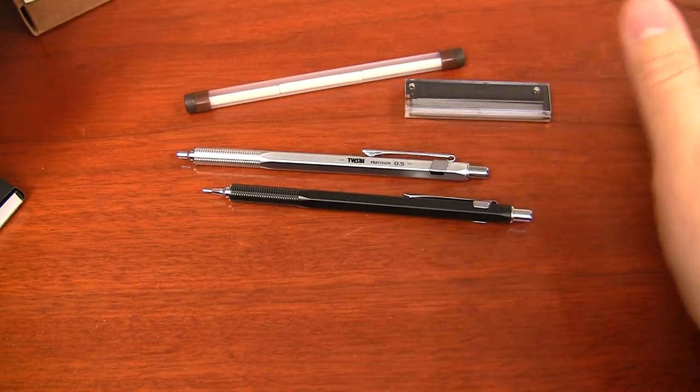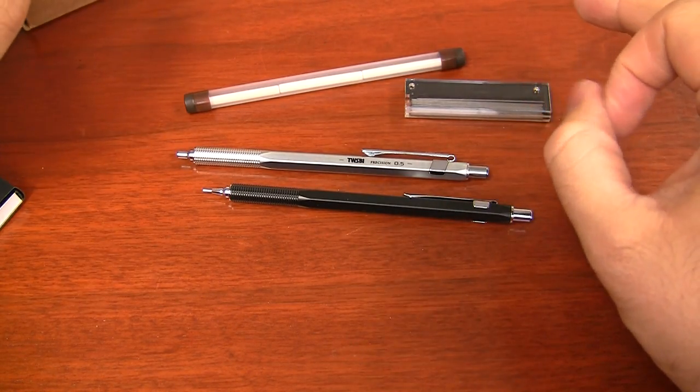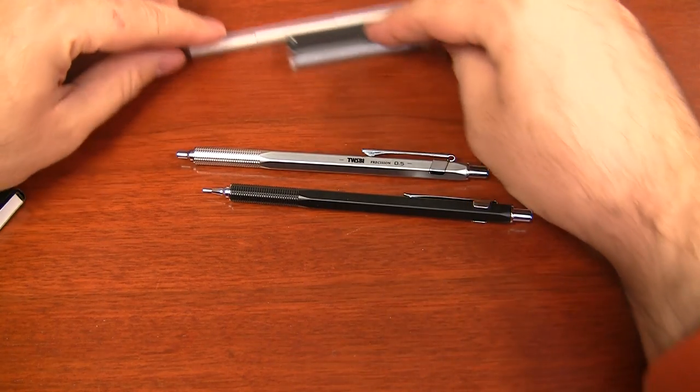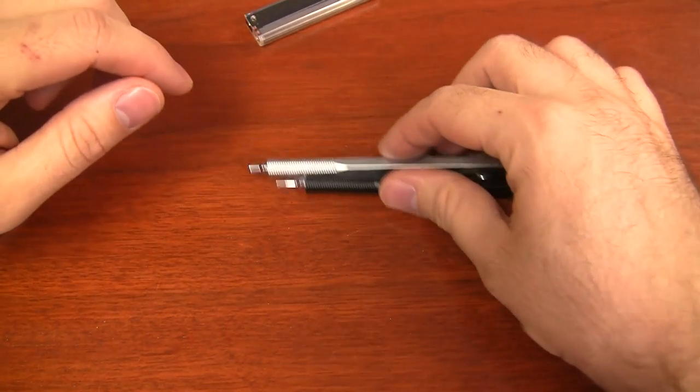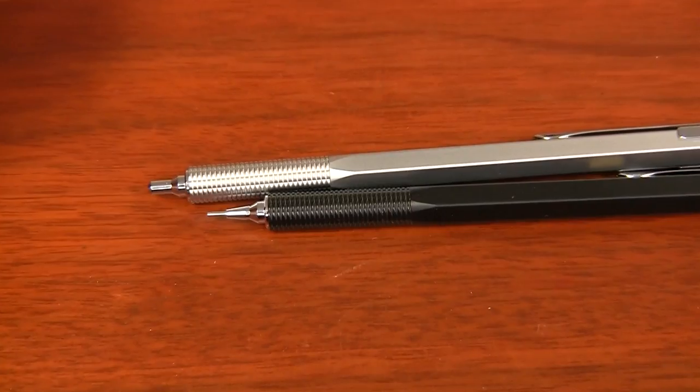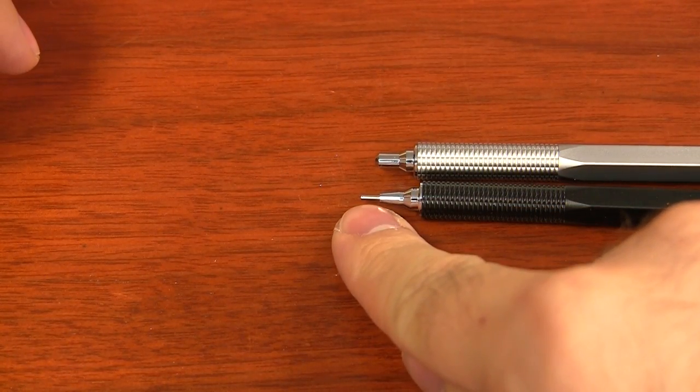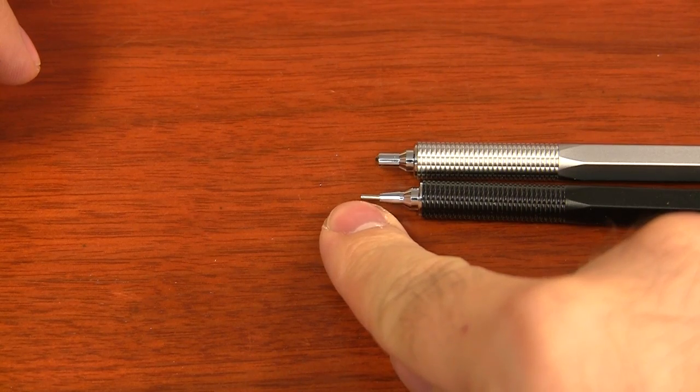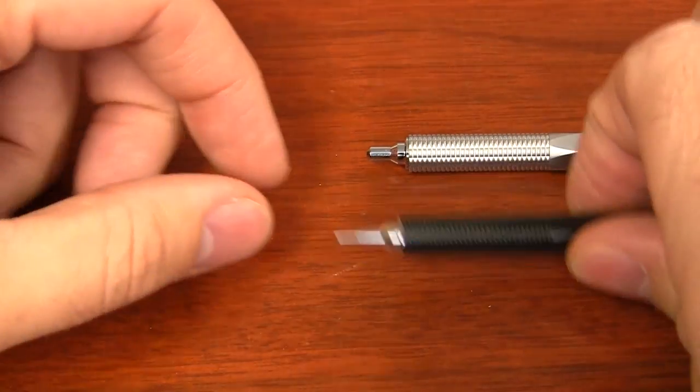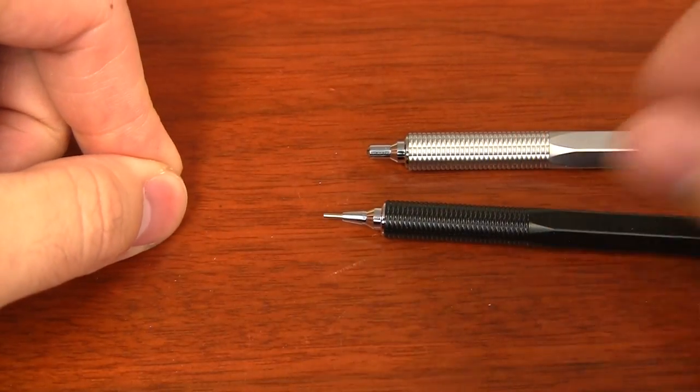Now, you're probably wondering more than anything, what is the difference between a fixed and a retractable tip? And I'll show you right here. It is basically just that the fixed tip has this little metal part which feeds the pencil lead out that stays there all the time. It does not go back into the pen.